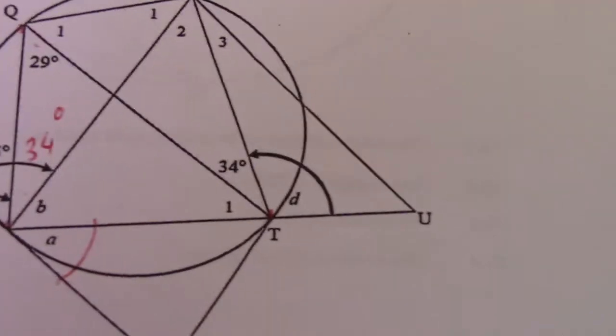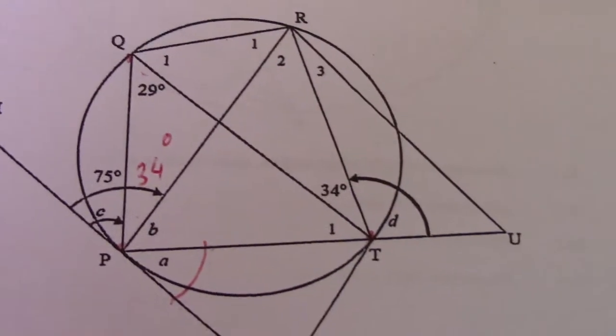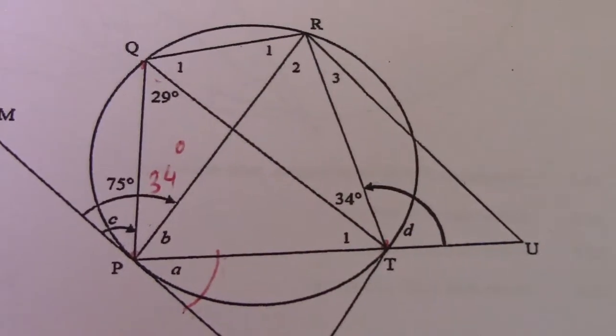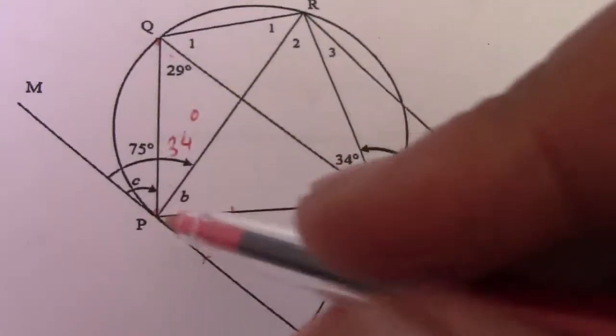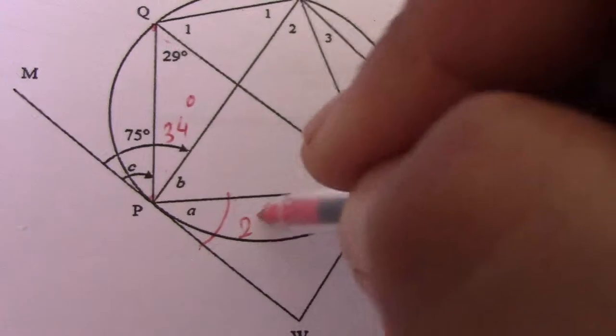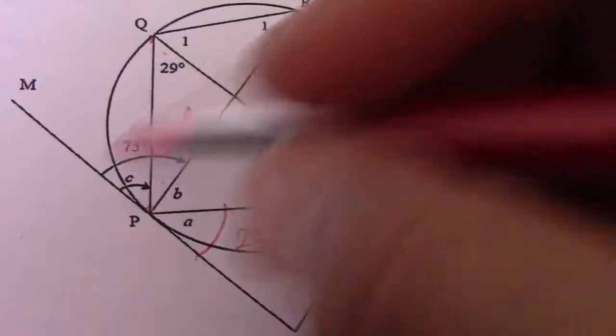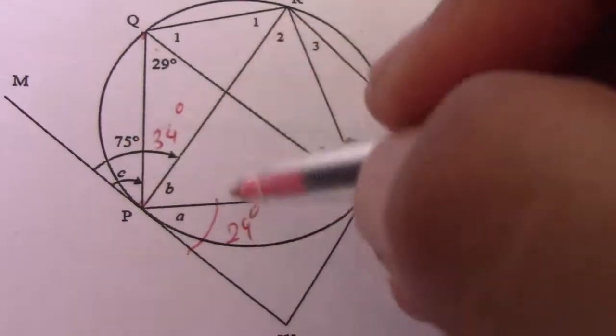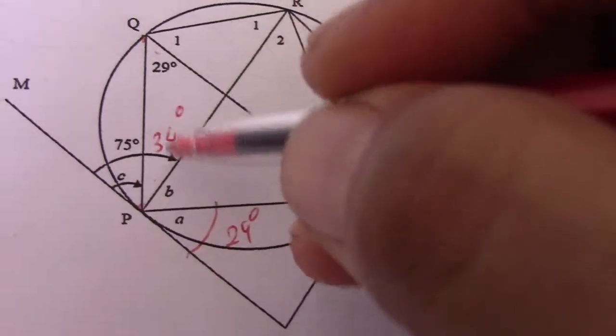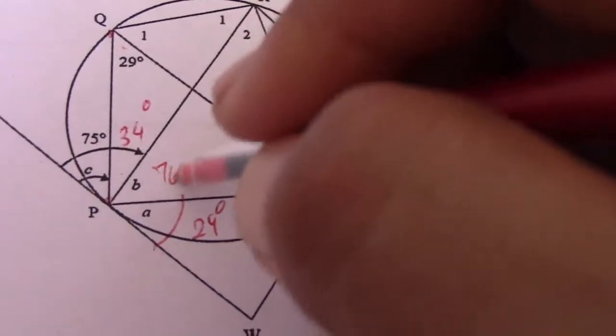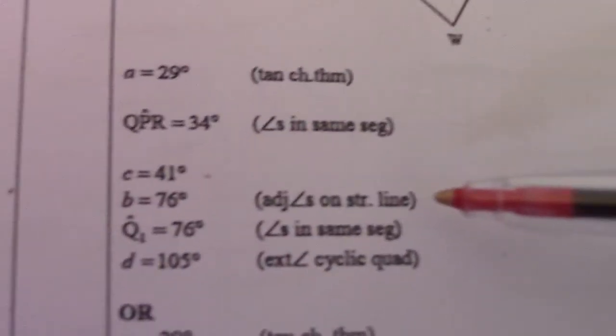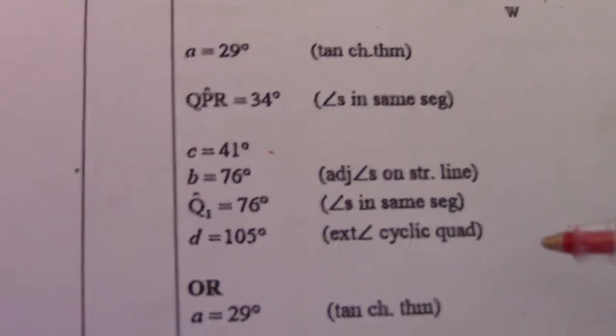Now, to get to P, P equals 76 degrees. Now how do we get 76? A is 29. That's 75. So 75 plus 29 gives me 104. So that gives 76 degrees left, angles on a straight line, or the adjacent angles on a straight line.